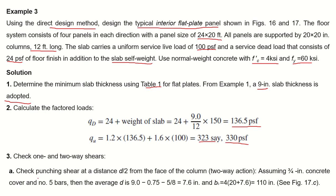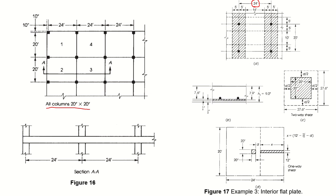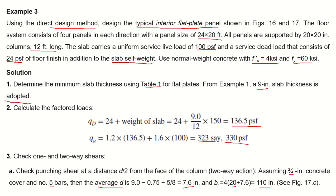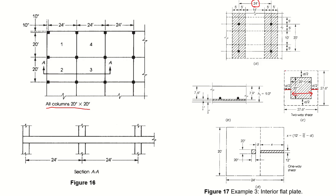Now check two-way (punching) shear at a distance d/2 from the face of the column. Assuming 3/4-inch concrete cover and No. 5 bars, the average effective depth d = 9 − 0.75 − 5/8 = 7.6 inches. The critical perimeter b₀ = 4 × (c + d) = 4 × (20 + 7.6) = 110 inches, where c + d accounts for d/2 on each side of the column.